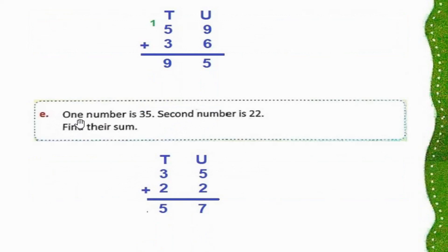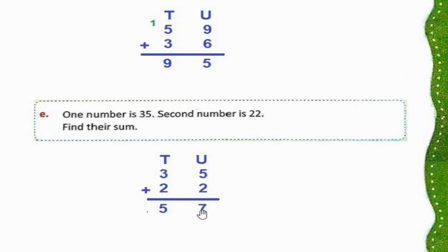Part E: One number is 35, the second number is 22. Find their sum. 35 ko 22 ke saath add karenge. 35 plus 22: 5 plus 2 is 7, 3 plus 2 is 5. The answer is 57.